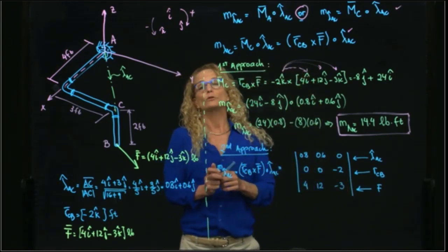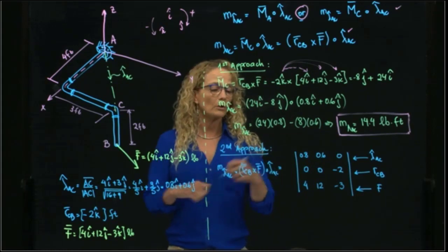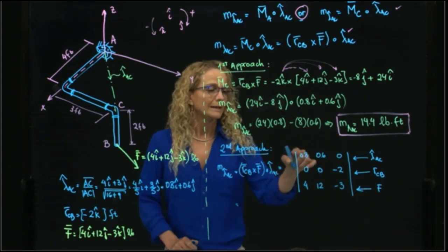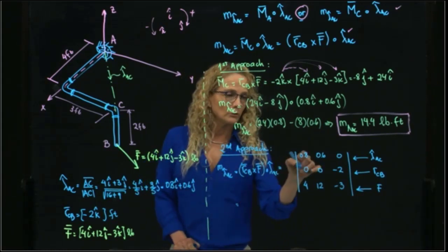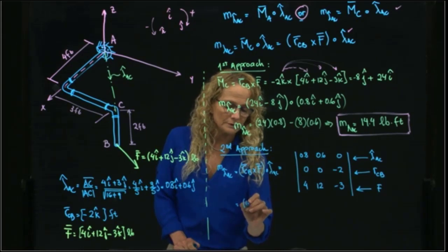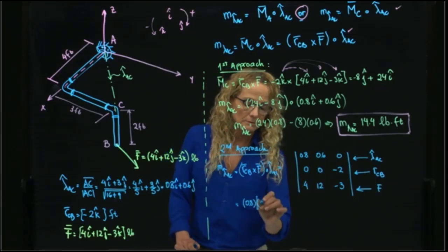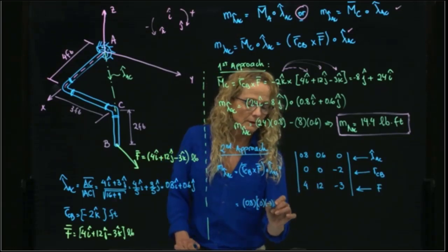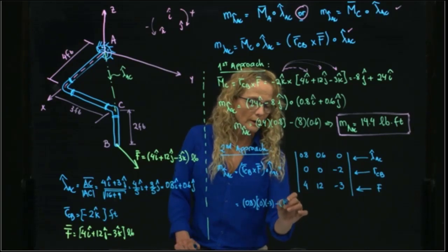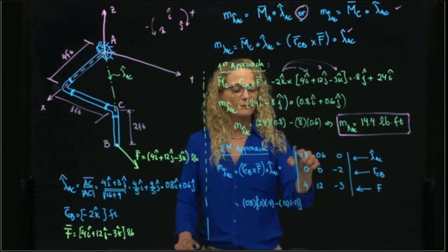Now that I have that matrix, we all know how to do that product. The first term in the first row, which will be 0.8, that multiplies... 0 times negative 3 minus 12 times negative 2. So this is the value for i.